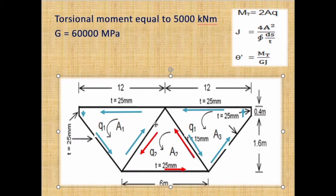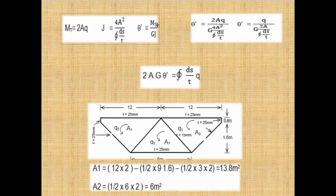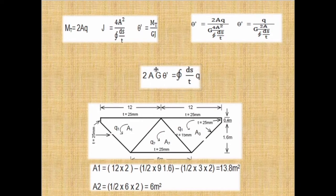Moving into the question, the equations are: mt = 2AQ; J = 4A² over the sum of ds/dt; and theta dash = mt over GJ. By substituting mt = 2AQ and J = 4A² over (ds/dt) into the theta dash equation, we can derive that 2AG·theta = sum of (ds/dt) · Q. We will use this derived equation for each loop.